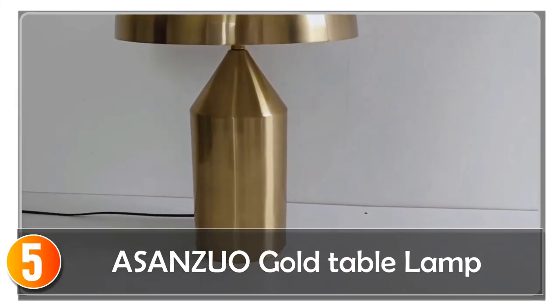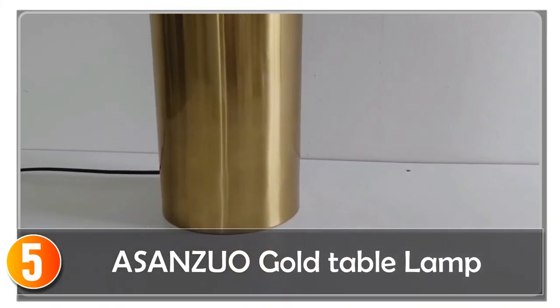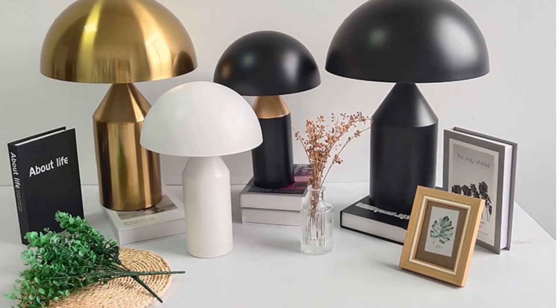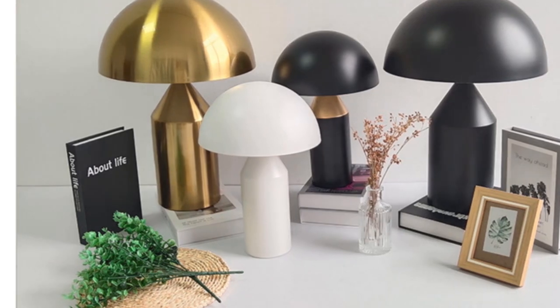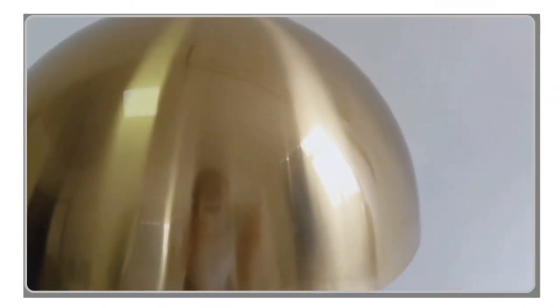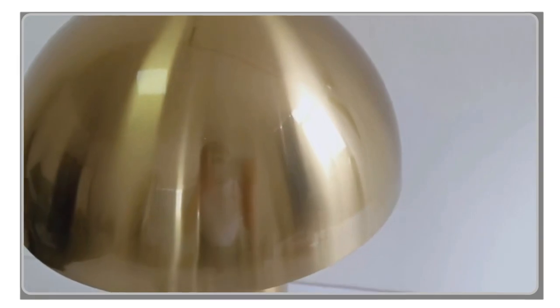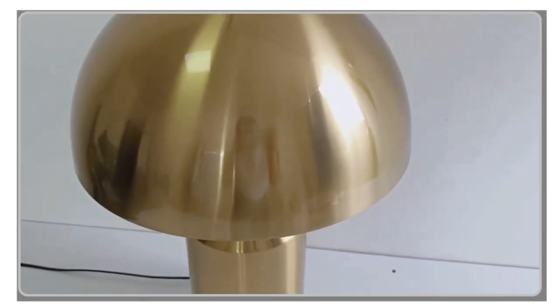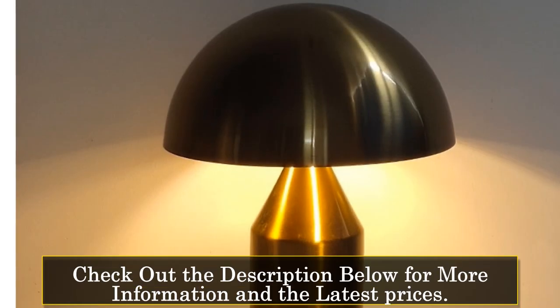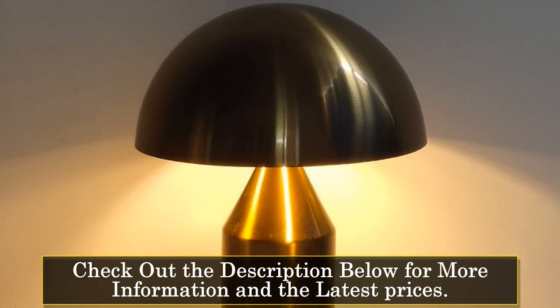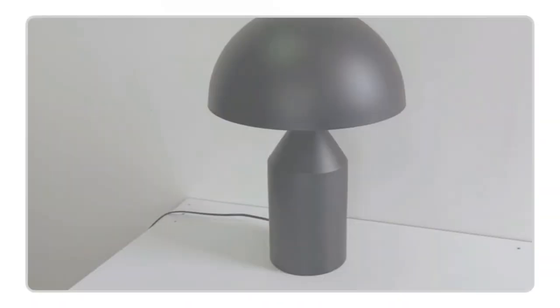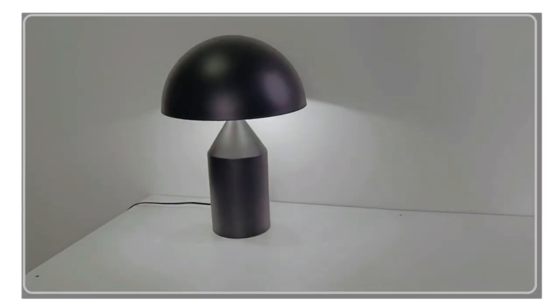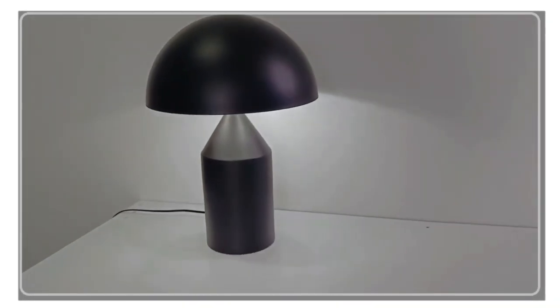Starting at number 5, the Asanzu Gold Table Lamp is a creative and eye-catching lighting fixture that adds a touch of charm to any bedroom, study, or living room. With its unique mushroom design, this table lamp offers a creative and decorative lighting solution. Crafted from high-quality iron, the Asanzu Gold Table Lamp showcases a sleek and modern finish. Its painted techniques ensure a smooth and durable surface that adds to its overall appeal. The lamp features a touch on/off switch for easy operation and convenience.